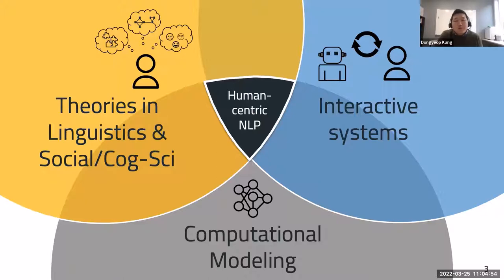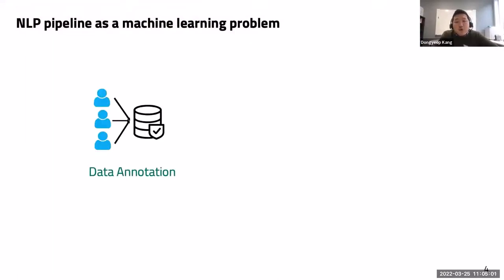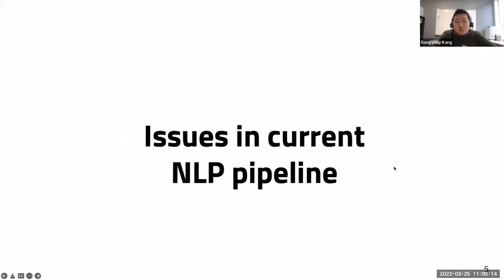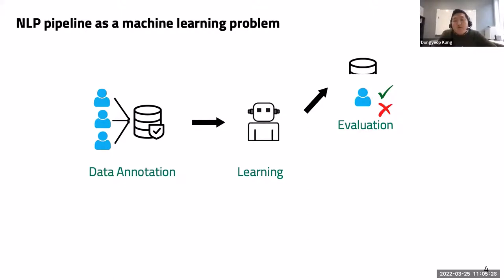Most NLP computational models are built on top of machine learning frameworks. We collect datasets annotated by human annotators, ensure quality by checking inter-annotator agreement scores, split the dataset into train and test sets, and train our deep learning or machine learning models. We then evaluate on held-out test sets. When model output requires human judgment — such as generated text or speech — we need human evaluators to assess fluency and coherence.